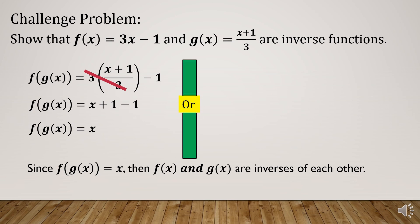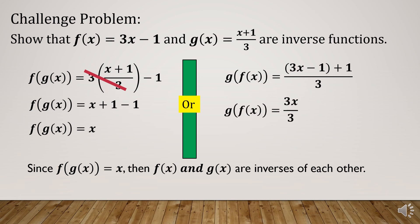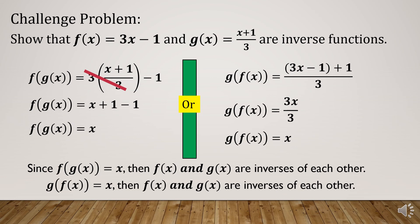We can also verify using g(f(x)), where g(x) is the outer function and f(x) is the inner. Substituting: g(f(x)) = (3x - 1 + 1)/3. Combining like terms, -1 + 1 = 0, leaving 3x/3. Simplifying, g(f(x)) = x. The result is still x, confirming that f(x) and g(x) are inverses of each other.